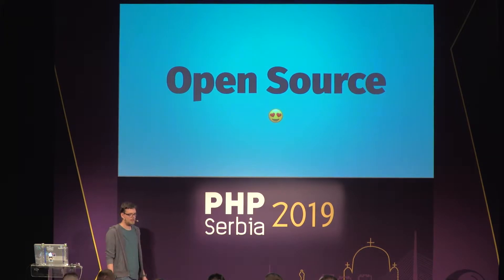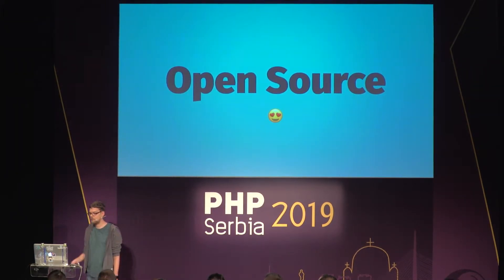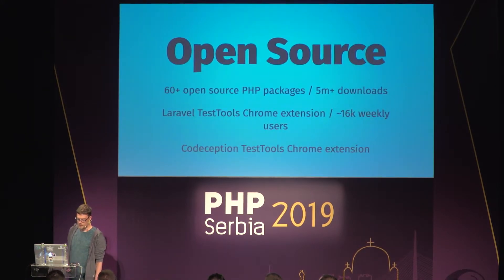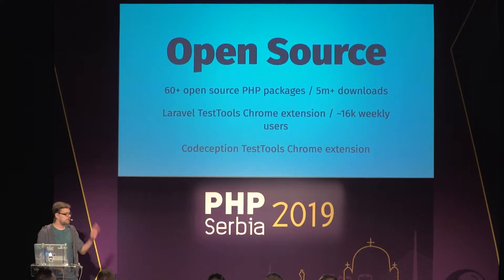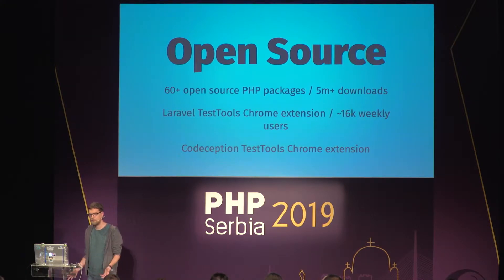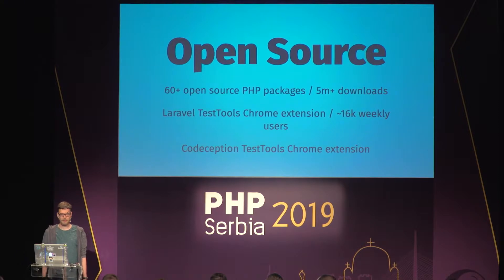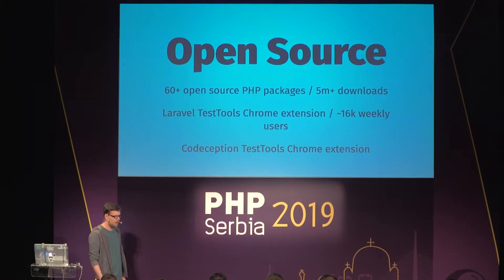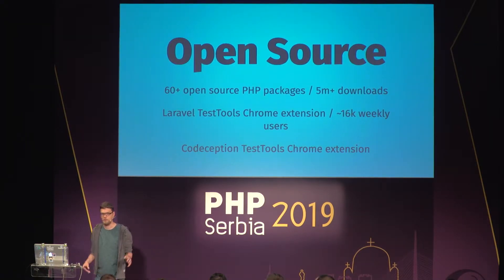I'm a managing partner, which means I'm not developing too much anymore, but I still love to do open source. Just some quick numbers — with the company and my personal account, it's more than 60 open source packages that I've developed, which have been downloaded at a rate of 800,000 times per month, which is mind blowing. So chances are that if you're in the Laravel ecosystem, maybe you've used one of my packages.